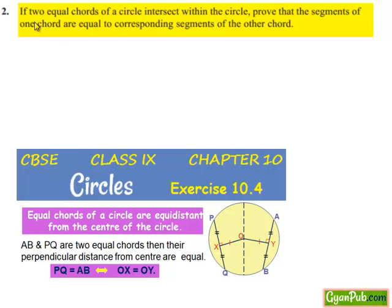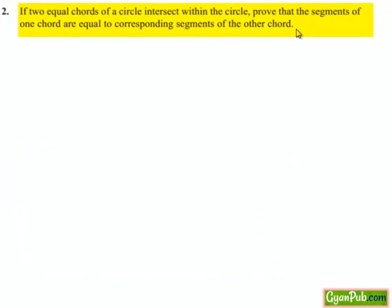Coming to the second question, if two equal chords of a circle intersect within the circle, prove that segments of one chord are equal to corresponding segments of the other chord.